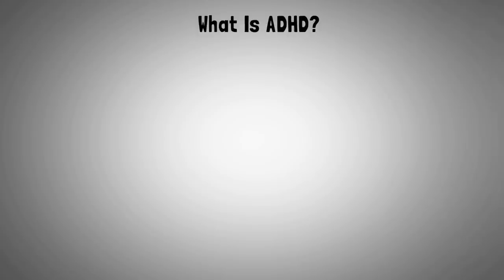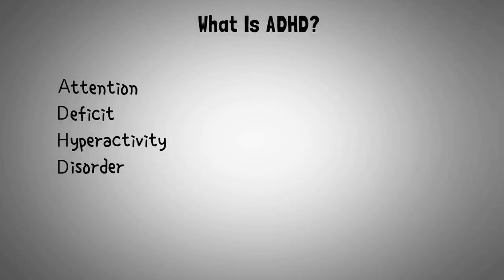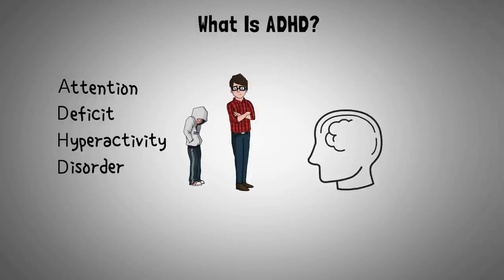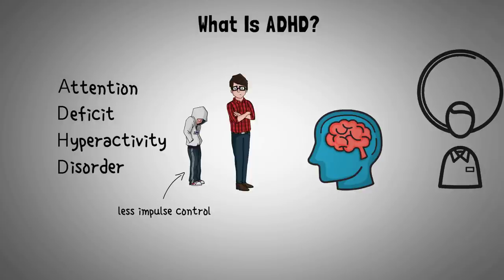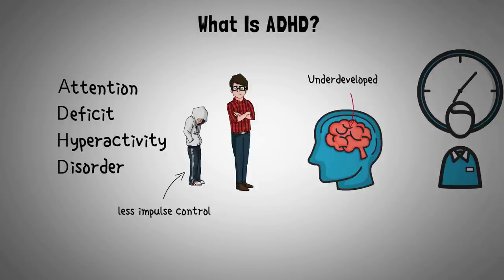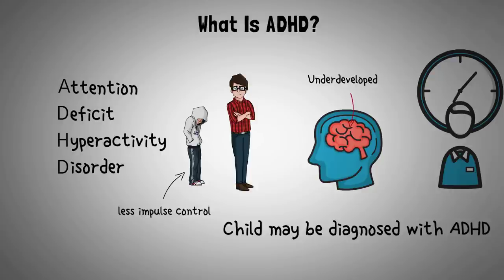So, what is ADHD? ADHD, or Attention Deficit Hyperactivity Disorder, is a neurodevelopmental disorder that affects both children and adults. As our brain grows and develops, we acquire or strengthen certain skills. A child naturally has less impulse control than an adult, and our ability to regulate emotions grows and changes over time. But for some people, these skills don't come so easily — their brain may be smaller or underdeveloped compared to their peers, and in these cases a child may be diagnosed with ADHD.